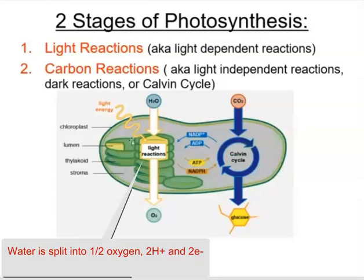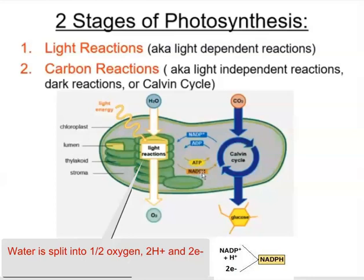In the light reactions, which happen within the thylakoid membrane, light energy is absorbed and water is split into hydrogen, electrons, and oxygen. Oxygen leaves as a waste product. Electrons and hydrogen are captured by the electron acceptor molecule NADP+, which gets reduced into NADPH. The hydrogen gradient also drives the production of ATP through ATP synthase — spinning just like in mitochondria during cellular respiration.